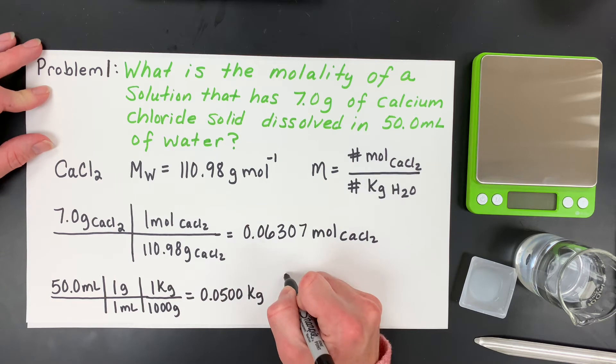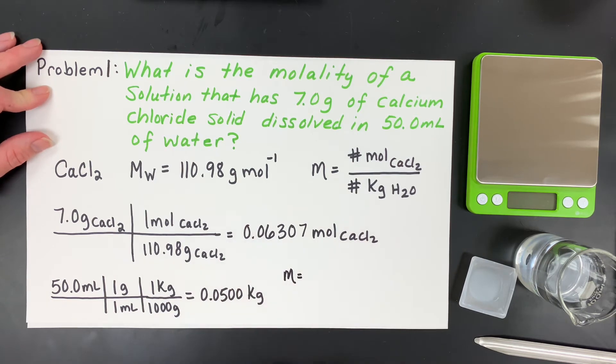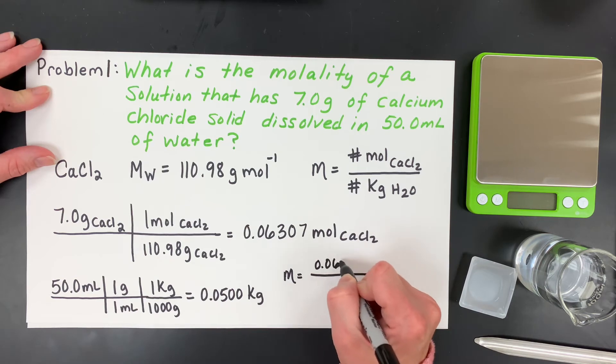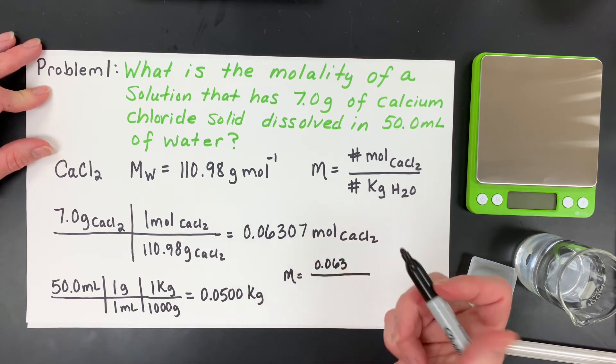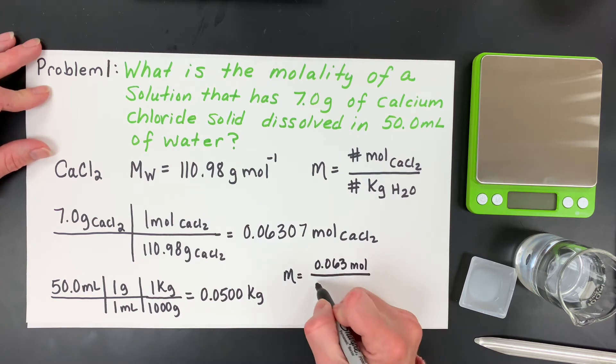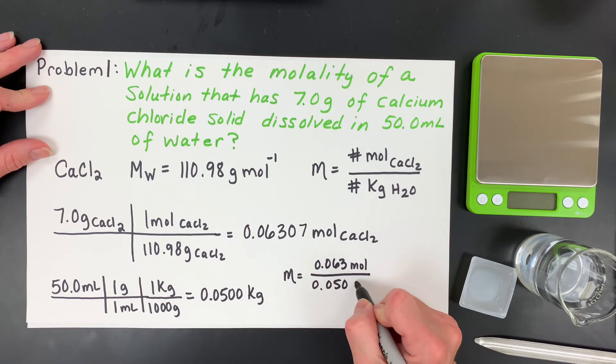Now what I need to do is just solve for my final answer. I'm going to take my 0.063, and then I'll divide that by 0.05. And then that's the kilograms. So what you want to do next is say, I have my moles, which I'm going to divide by my kilograms, which is the 0.05.